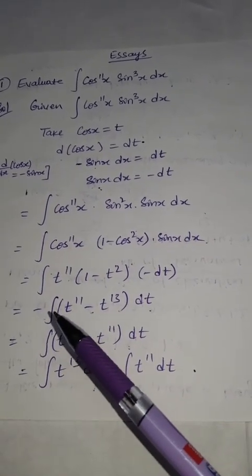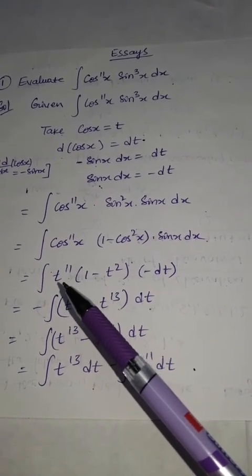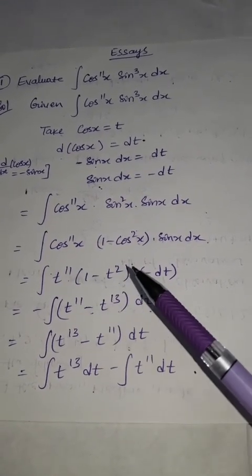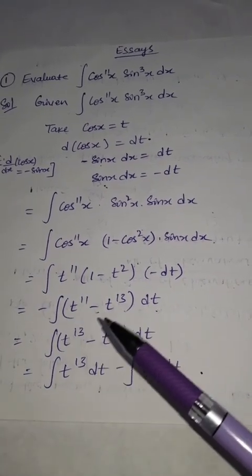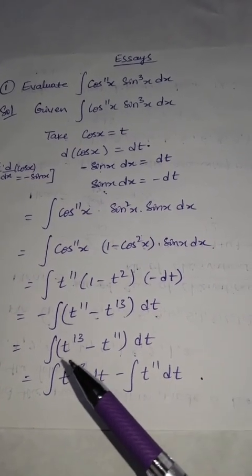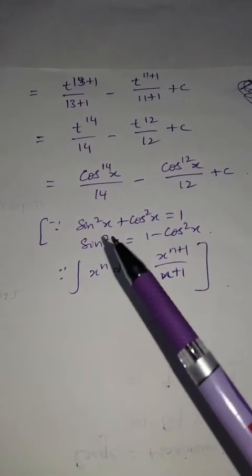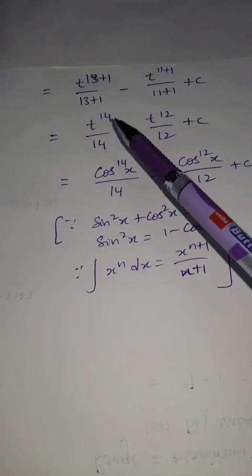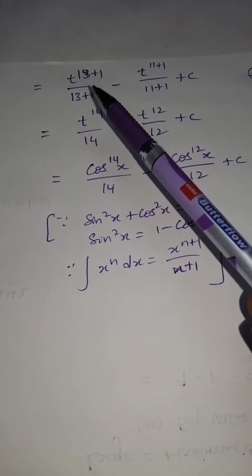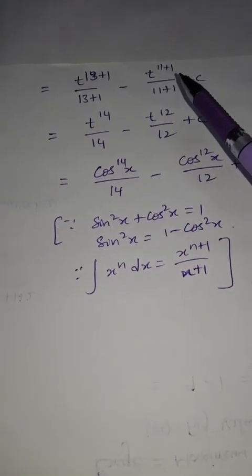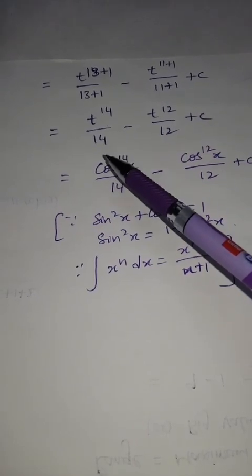Expanding: minus integral of t¹¹(1 minus t²) dt equals minus integral of (t¹¹ minus t¹³) dt. Using the power rule (integral of tⁿ dt = t^(n+1)/(n+1)), we get minus [t¹²/12 minus t¹⁴/14] plus c.